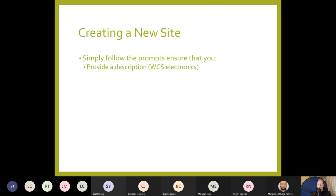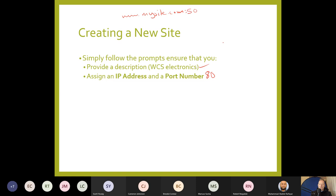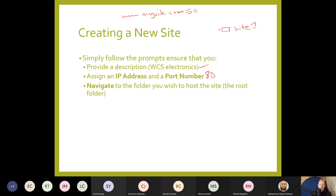Follow the prompts: provide a description for the website — for example, WCS Electronics — this is for administrative purposes only, not what users see. Assign an IP address and port number. The default port is 80, which is what all your websites will use. They're separated by IP address, not port. Then navigate to the folder you want to host the site — for example, inetpub/site one — and select that as the root folder.